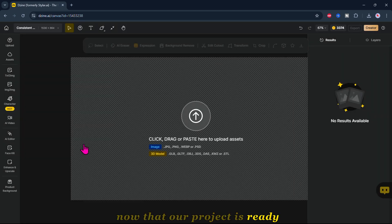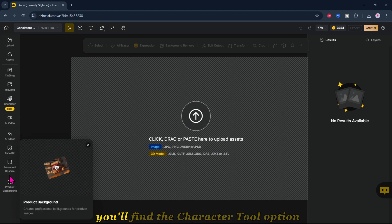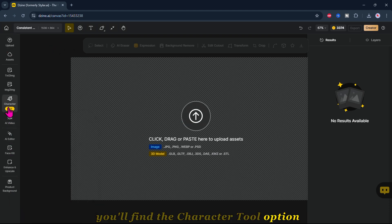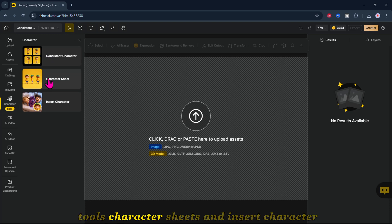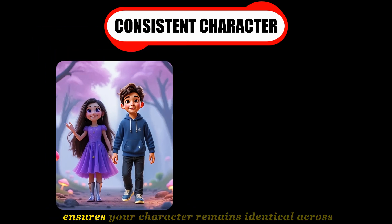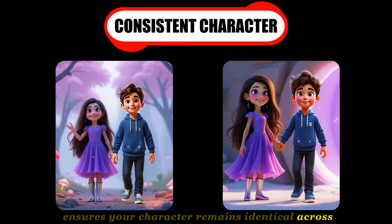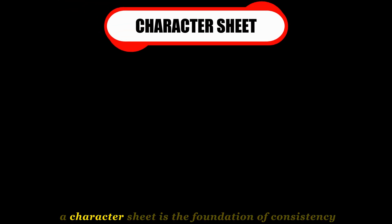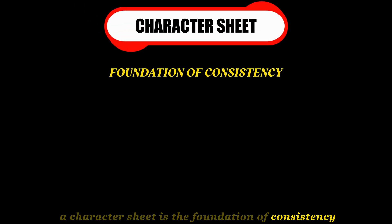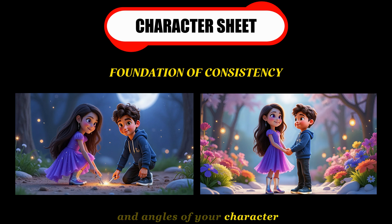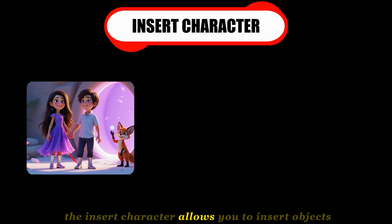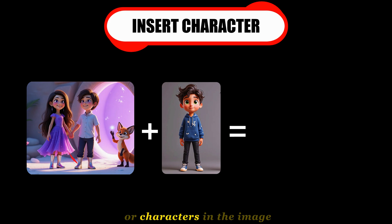Now that our project is ready, let's dive into character creation. On the left sidebar, you'll find the character tool option where you'll have access to both consistent character tools: character sheets and insert character. The consistent character feature ensures your character remains identical across all images. A character sheet is the foundation of consistency — it helps you generate different poses and angles of your character. The insert character tool allows you to insert objects or characters into the image.